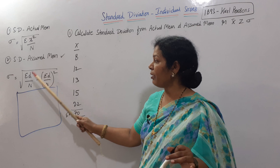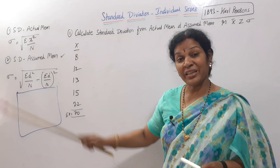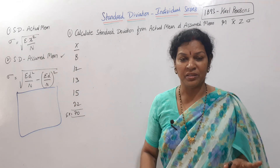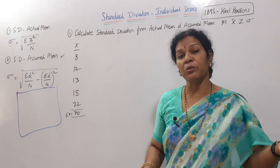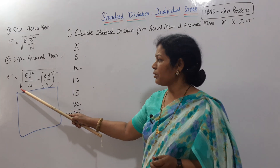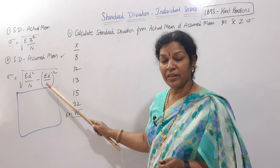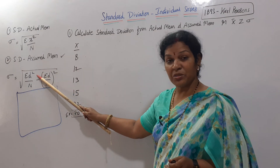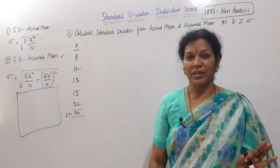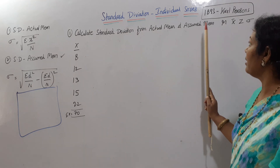If we use the assumed mean method, the formula is very important, but remember there are no different types of mean — the answer will be the same. The assumed mean method uses a slightly different formula but gives the same result. The student can work this out for the individual series: calculate standard deviation from both actual mean and assumed mean methods.